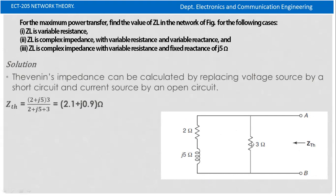The impedances will be in parallel: (2 + j5) in parallel with 3, divided by (2 + j5 + 3). The source impedance Zth equals 2.1 plus j0.9.